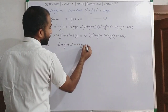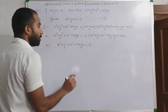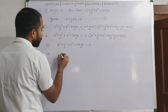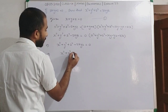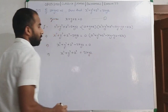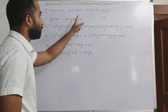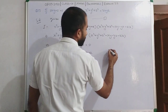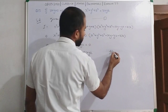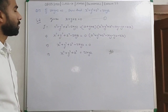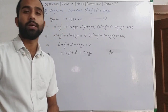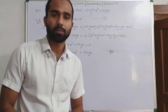तो इसे आप लिख सकते हैं: is equal to 0. अब यह वाला term minus 3xyz right hand side transpose कर दोगे तो: x³ plus y³ plus z³ is equal to 3xyz. और आप देखेंगे कि आपको इसी term को proof करना था, जो कि हम लोगों ने proof कर लिया. Hence proved. यह काफी आसान question था. बस identity के ऊपर थोड़ी सी महारत हासिल करनी पड़ेगी.